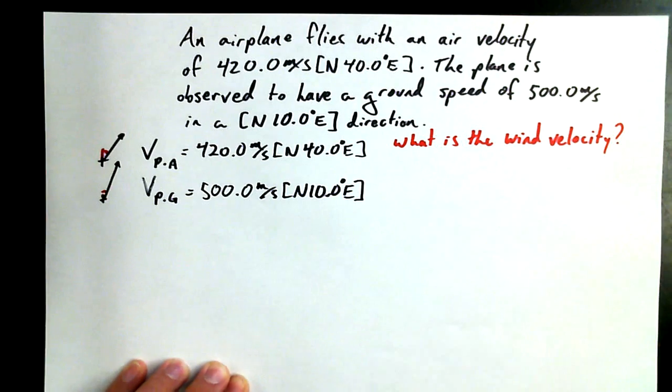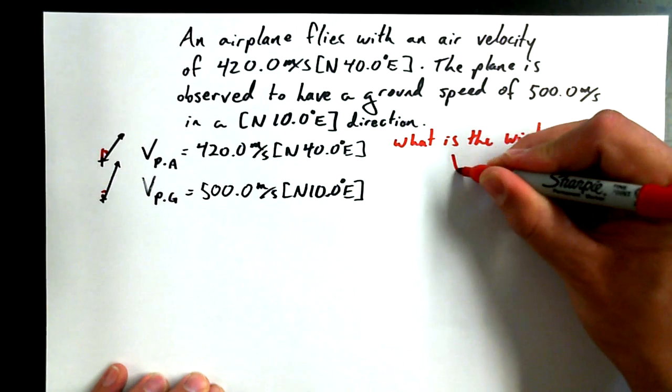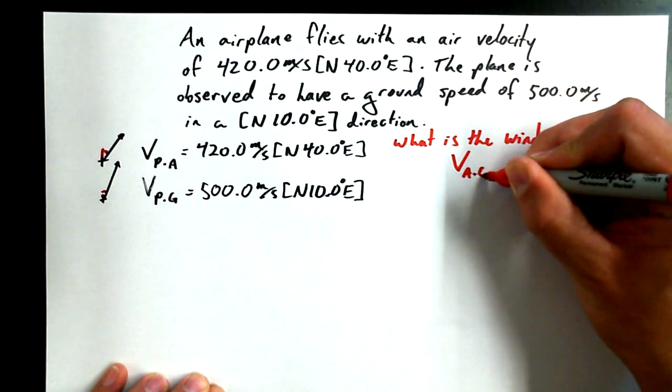And then if I have 500 meters per second north 10 degrees east, well, it's going to be a little bit of a longer vector, but also a more acute angle relative to the north. So we've got a sketch of what these two look like. And we haven't even asked a question yet, but we've set up what we know. So here's the question. What is the wind velocity in this scenario? What is the wind velocity? And if I ask for the wind velocity, what I'm really asking for, in terms of subscripts, is the velocity of the air relative to the ground.